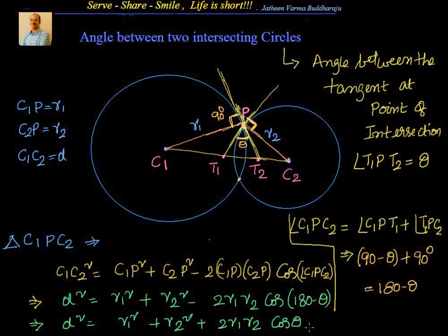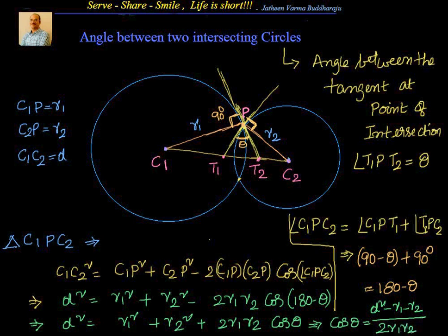Why is cos(180 − θ) equal to minus cos θ? Because 180 minus theta falls between 90 and 180 degrees, and in that range cosine is negative. So this gives us cos θ equals (D² − R1² − R2²) divided by 2R1R2. So the angle between two intersecting circles — the angle between the tangents drawn at the point of intersection — has its cosine given by: cos θ = (D² − R1² − R2²) / (2R1R2).